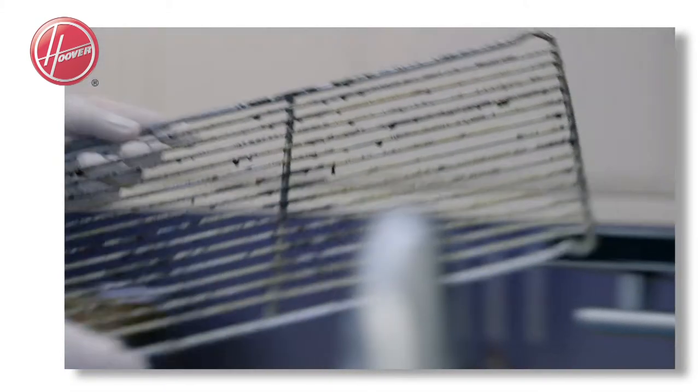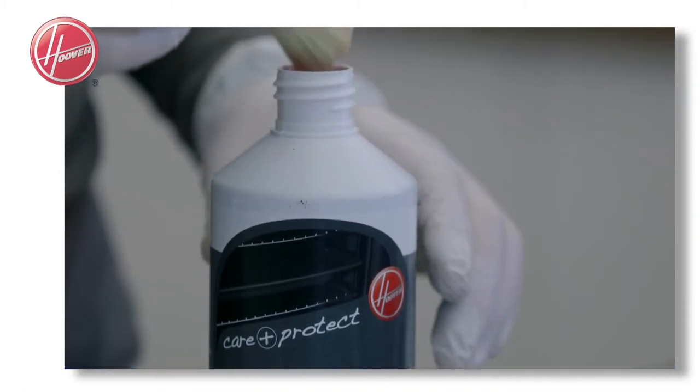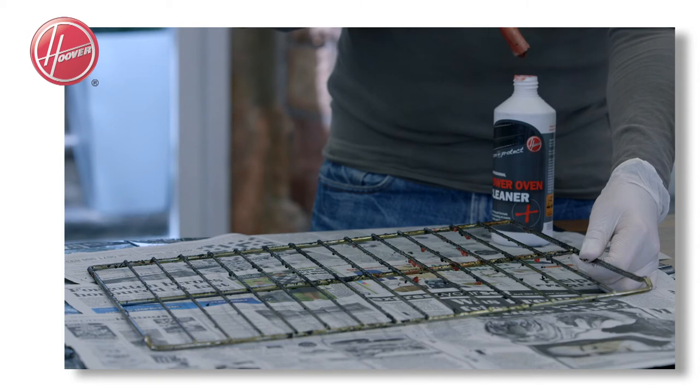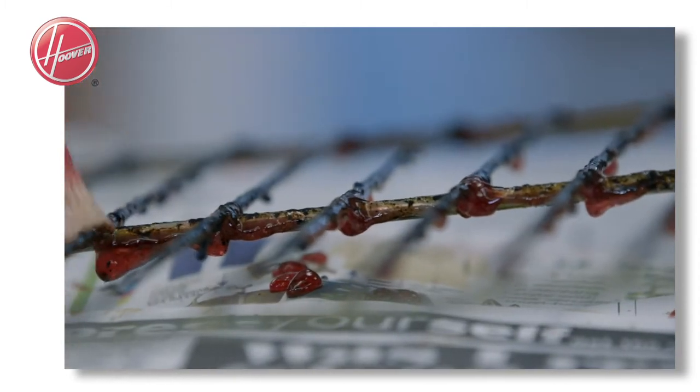Start by taking out the racks and laying them on your prepared surface. The brush provided will help you apply the gel only to the areas you want to clean. Agitate the brush like this and you'll see the gel starting to act.